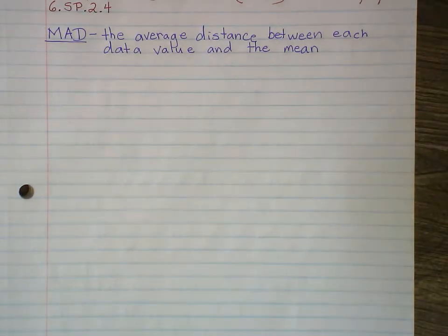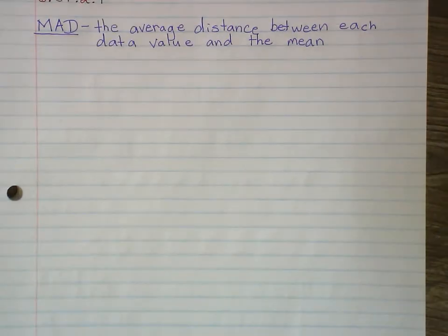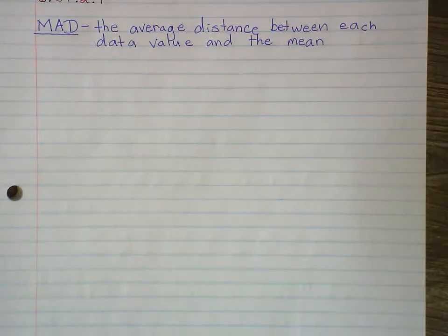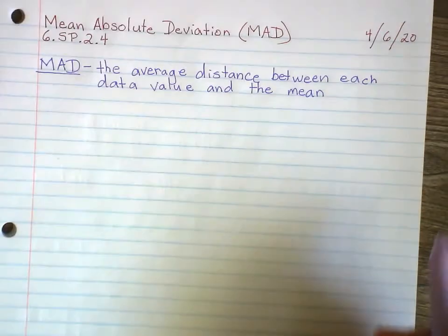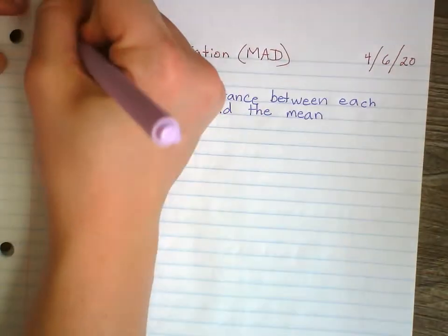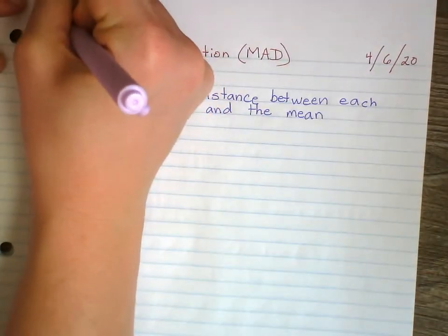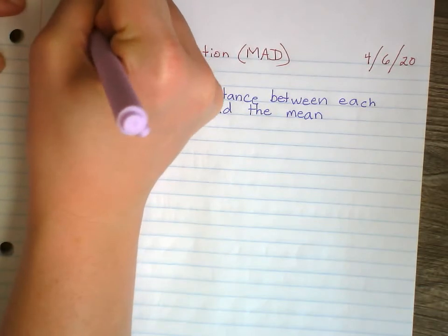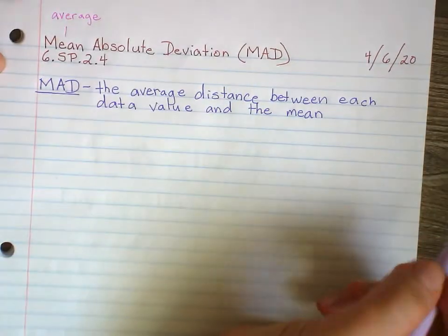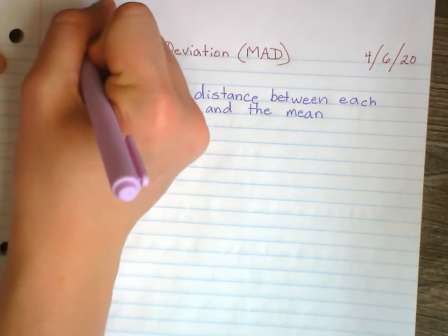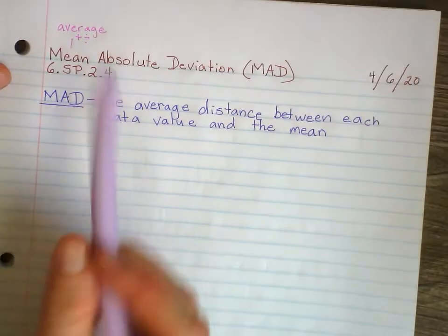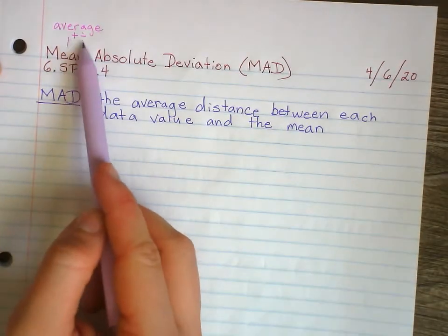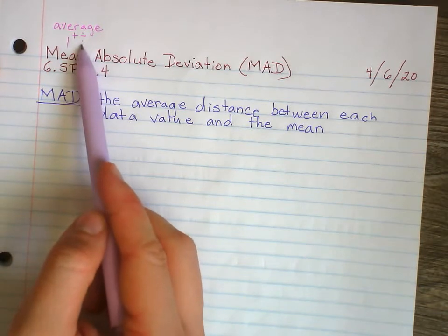Let me zoom in a little bit. So let's think about what that means. Mean — mean is just the average. We did this last week. You do the average by adding everything up and dividing — you add up all the data values and then divide by how many data values there are.